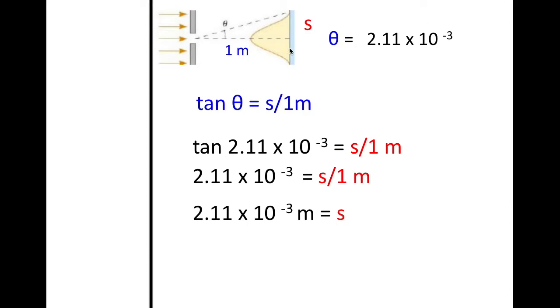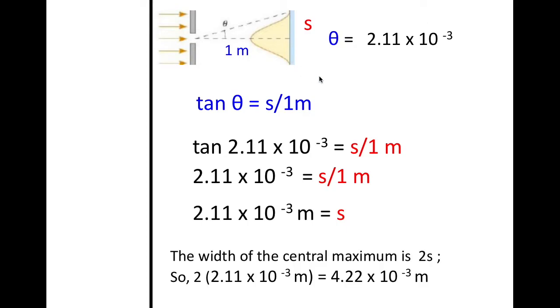Now we also know that we need twice that much, so all you have to do is multiply it by 2, and you get 4.22 times 10 to the negative 3 meters.